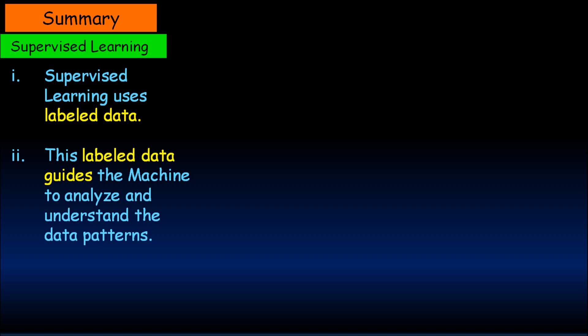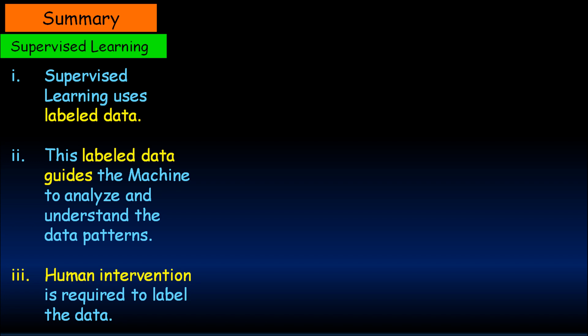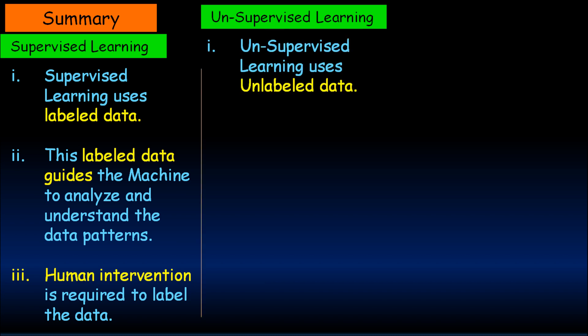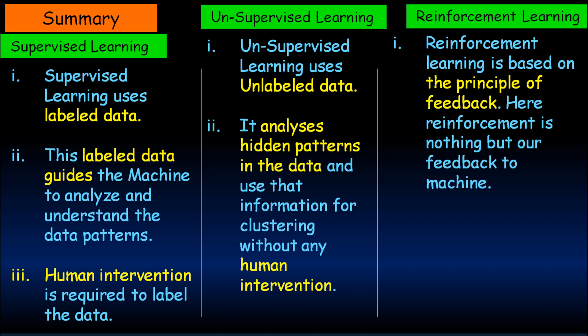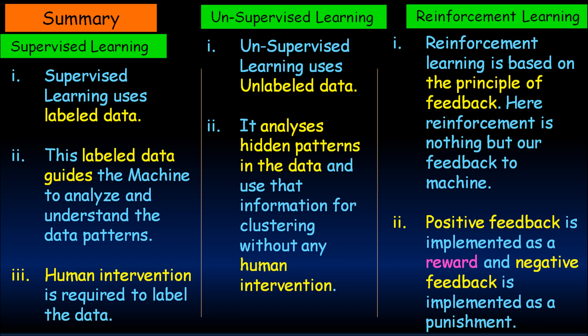Now let us summarize the three types of machine learning. Supervised learning uses labeled data — this labeled data guides the machine to analyze and understand the data patterns, and human intervention is required to label the data. Unsupervised learning uses unlabeled data; it analyzes hidden patterns in the data and uses that information for clustering without any human intervention. Reinforcement learning is based on the principle of feedback, where positive feedback is implemented as a reward and negative feedback is implemented as a punishment.